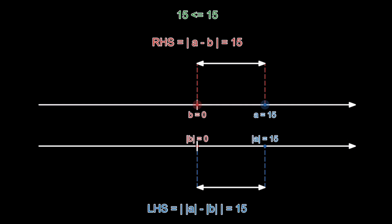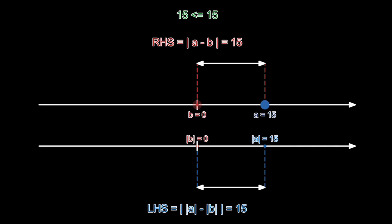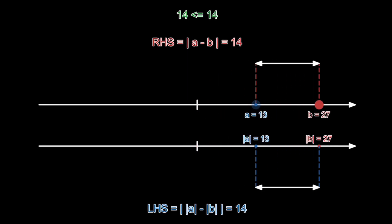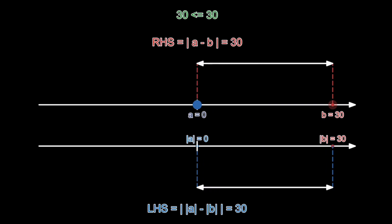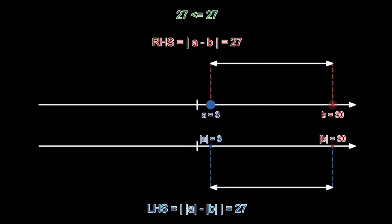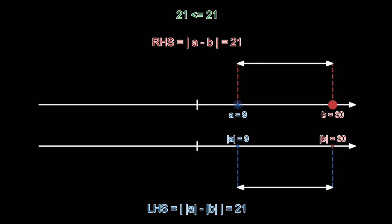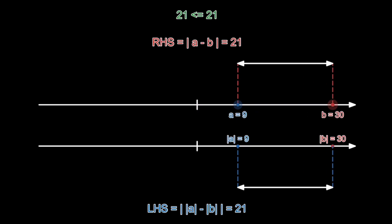Intuitively, what we just proved is nothing really extraordinary. If you do have indeed a and b greater or equal to zero, then as you can see here visually and numerically, they clearly are going to be equal to each other, because both of them are just simply measuring the distance between a and b.